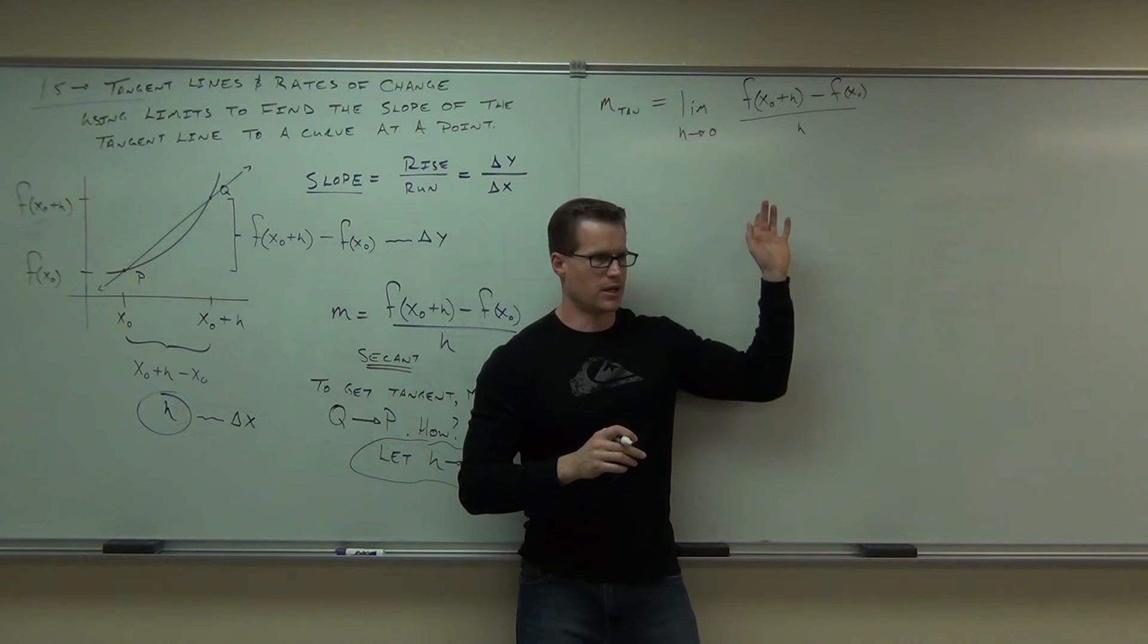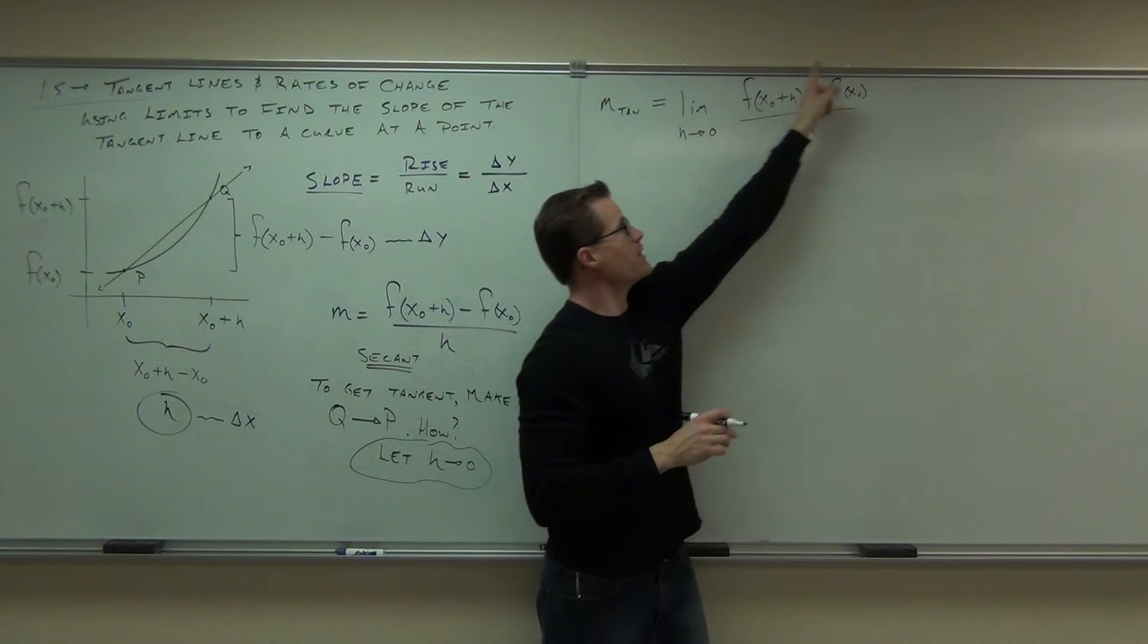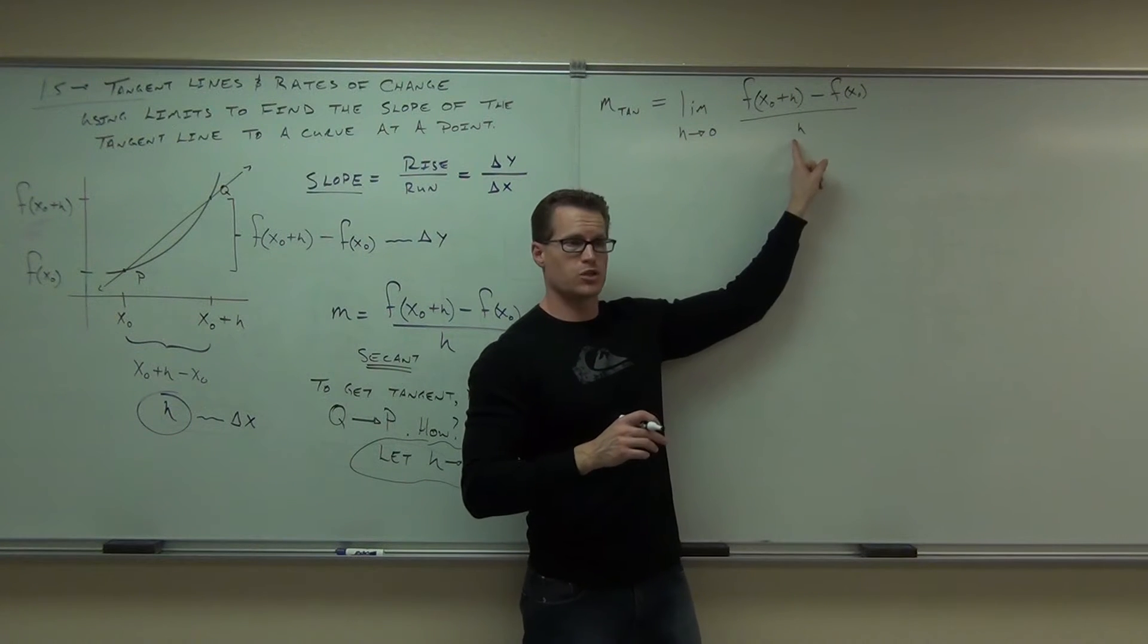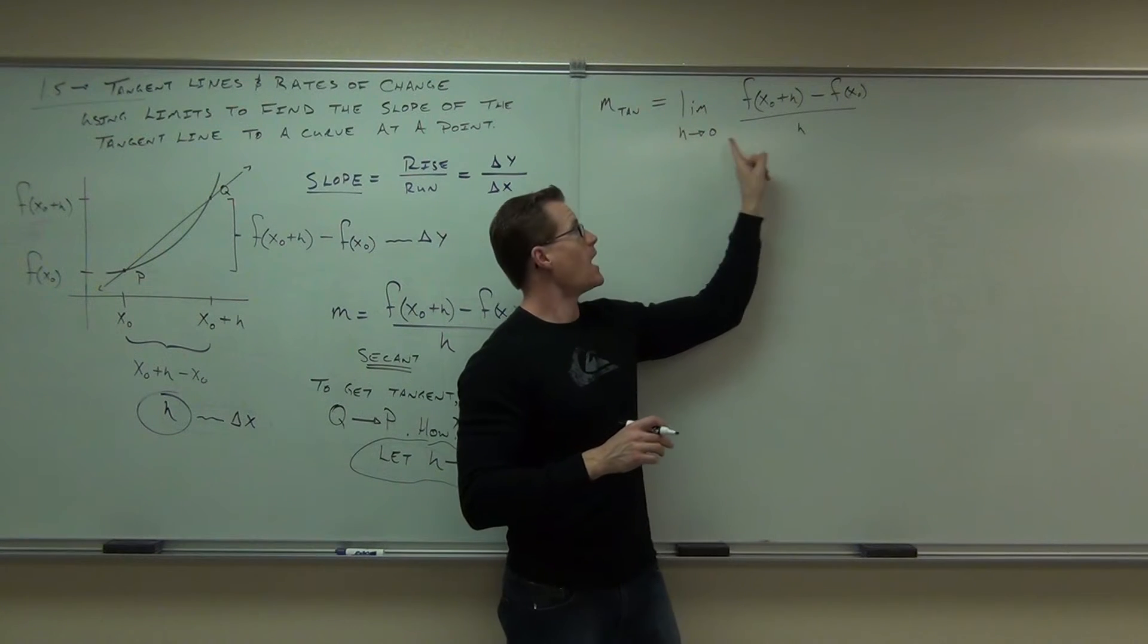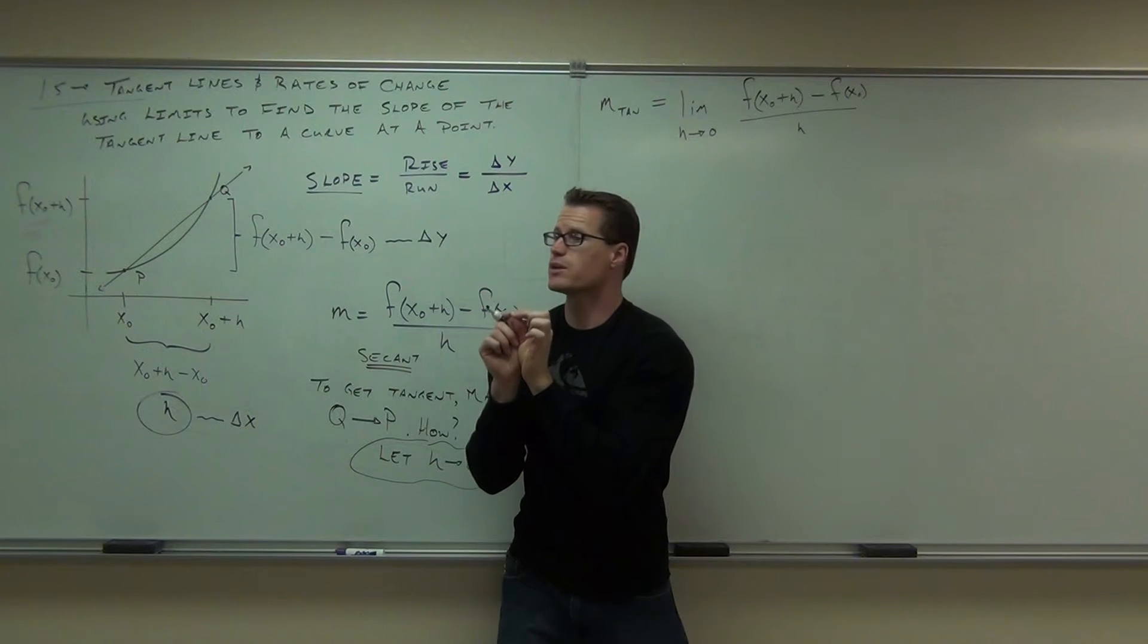I could have just given you that, right, and said that's the slope of the tangent line. But do you see what's happening here? Do you see how this is the slope of any two points that I want? This is the slope, and this is the distance between those two points. And what this says is I'm making that distance get really close to 0. Can it ever equal 0?